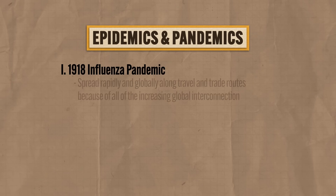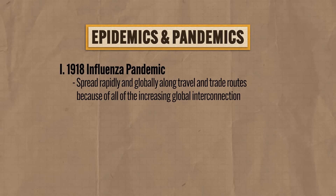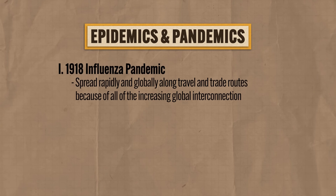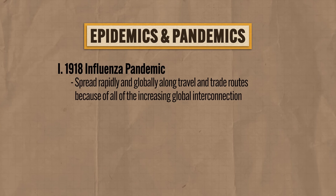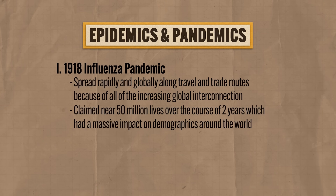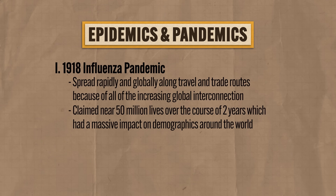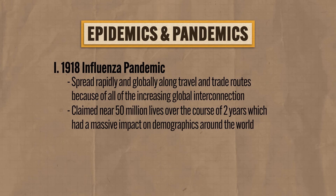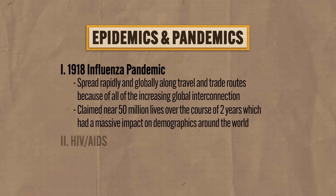Just like earlier pandemics, it spread rapidly and globally along travel and trade routes because of increasing global interconnection. Ultimately, the pandemic claimed something like 50 million lives over the course of two years and had a massive impact on demographics across the world, especially since it disproportionately affected people of working age. Medical scientists were unable to develop any significant interventions to stop the spread of the virus.